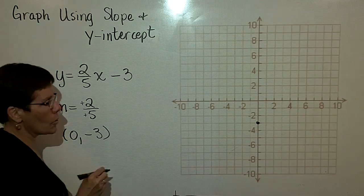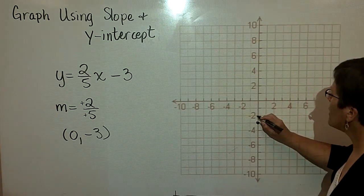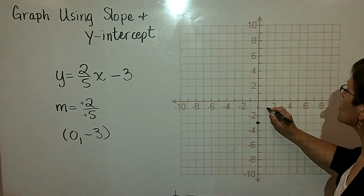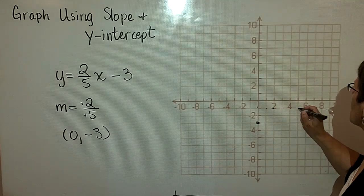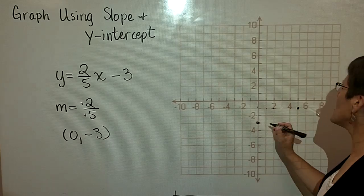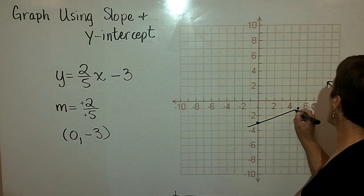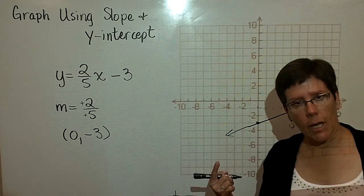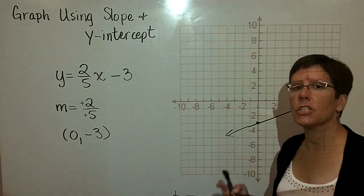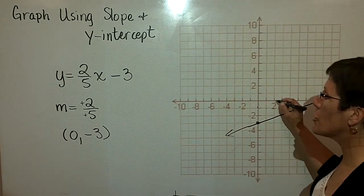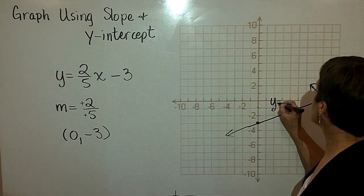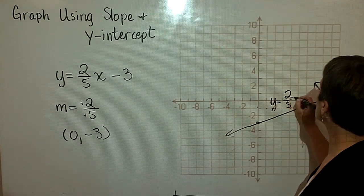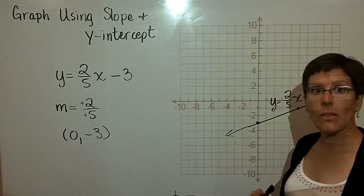So from that ordered pair, go up 2, and then go to the right 5: 1, 2, 3, 4, 5. And you have two ordered pairs. It's so simple. Graph the y-intercept. From that, move in the direction for the change in y over the change in x, and plot in the other ordered pair. And then state that this is the graph of the line y = (2/5)x - 3.